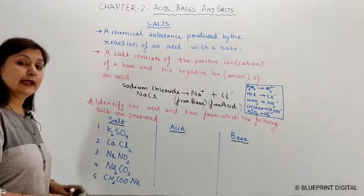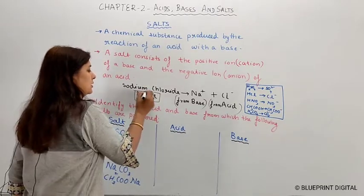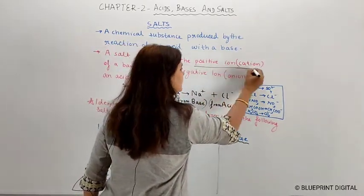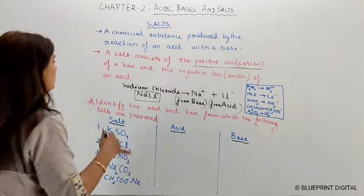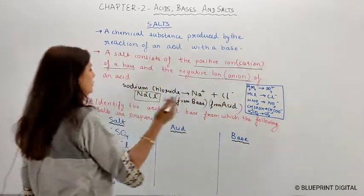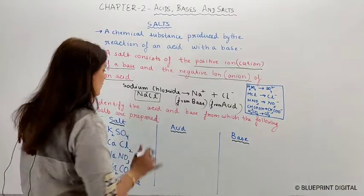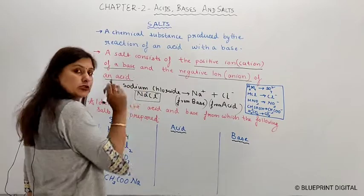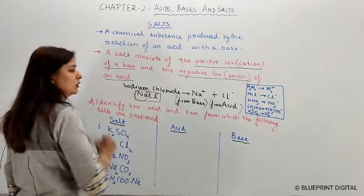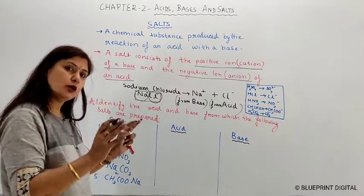A salt consists of a positive ion — what do we call it? A cation. Salt has two parts: a positive ion and a negative ion. The salt is made of a positive ion called a cation, and the positive part of the salt comes from the base. The negative ion — the anion — comes from the acid. So the positive part comes from the base and the negative part comes from the acid.